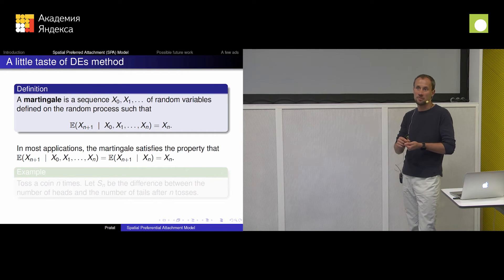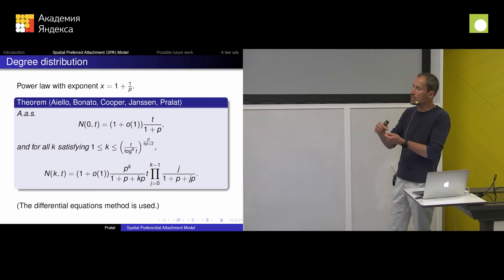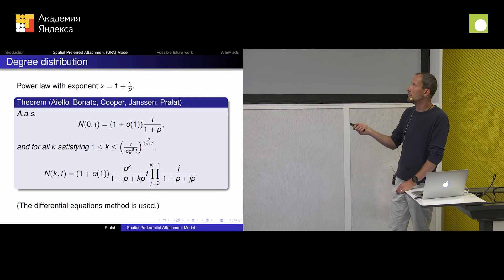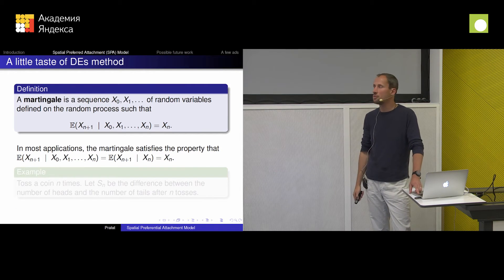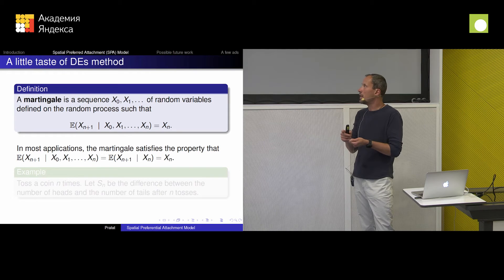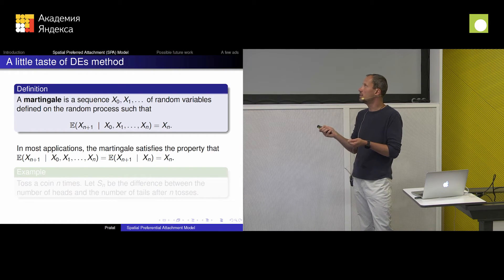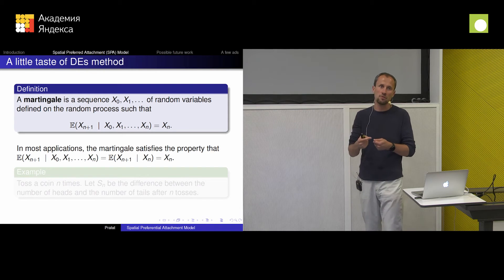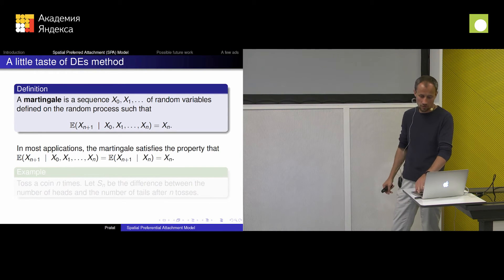So how do we apply this differential equation method? What's going on? How can we, for example, try to show that the number of isolated vertices — the number of vertices that nobody connected to — is a certain fraction of the total number of nodes? I'm going to use the so-called martingales. What is this? It's a sequence of random variables, and I want to have the property that if you ask me what is the expected value at the next round, and you tell me the value in the current round, I want the expectation to be exactly the current value. That's the definition of a martingale.